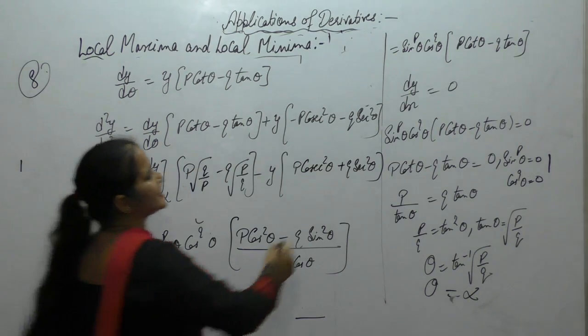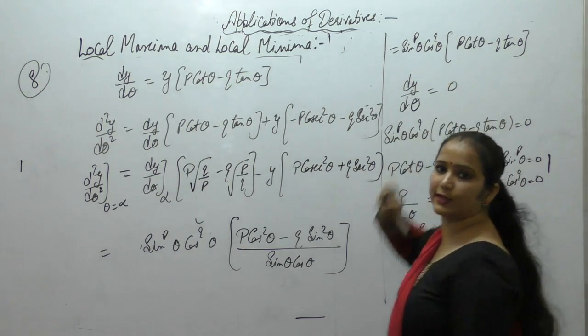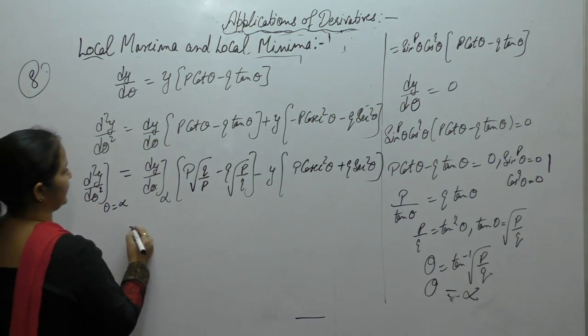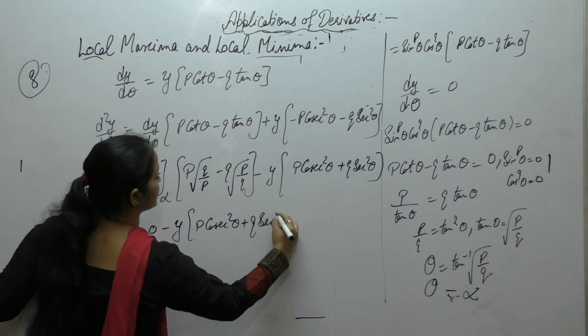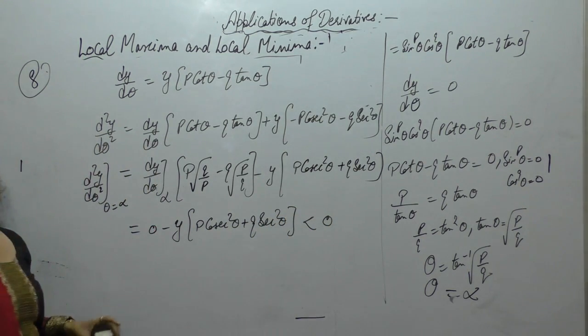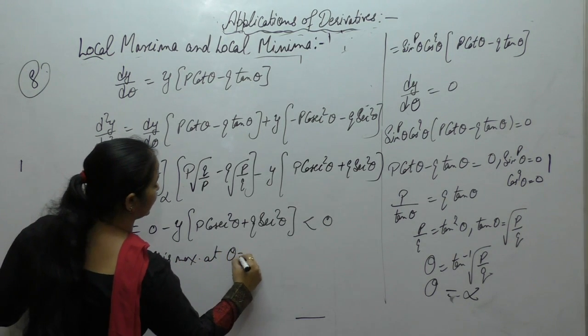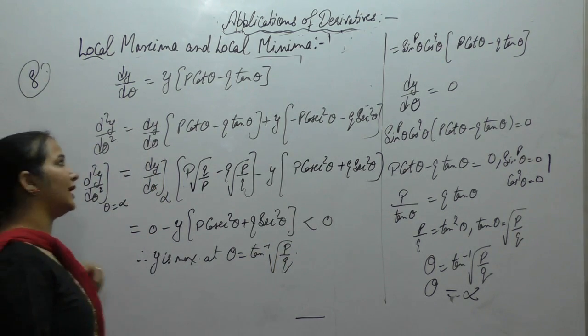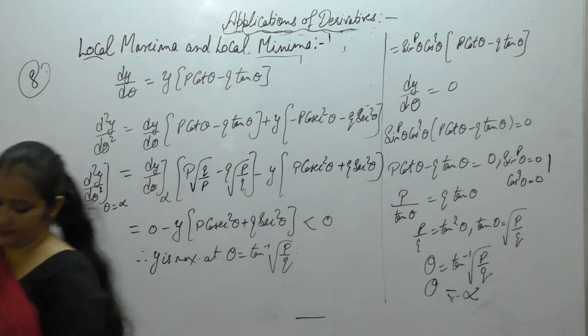Now if we put theta equals alpha in this derivative, then what we get? cot theta is reverse of this. And negative sign is here. So dy upon d theta at alpha is 0 minus y into p cosec square plus q, negative term, so less than 0. Therefore y is maximum at theta equals tan inverse root p upon q. Now second derivative less than 0, it means theta, that is the point of local maxima. Therefore y is maximum at this value.